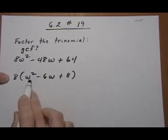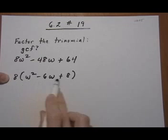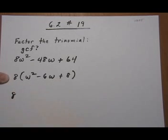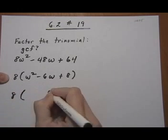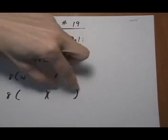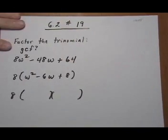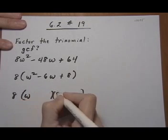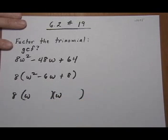So now we want to factor the inside trinomial here that are the leftovers. The GCF of 8 just tags along, and we're going to use binomial factoring to factor down this trinomial. We know we're going to start with w and w, so that we can get w squared.